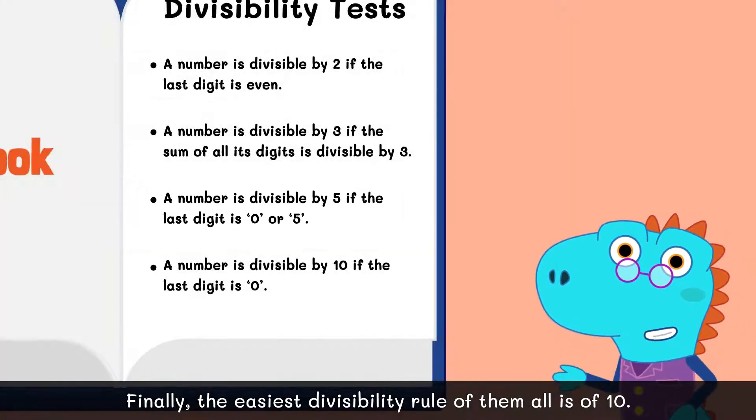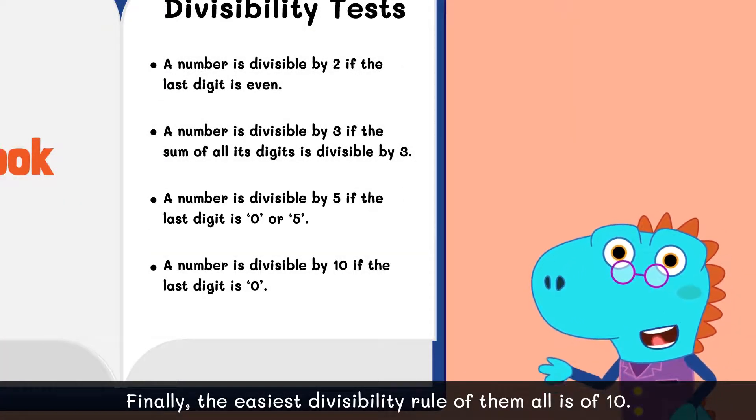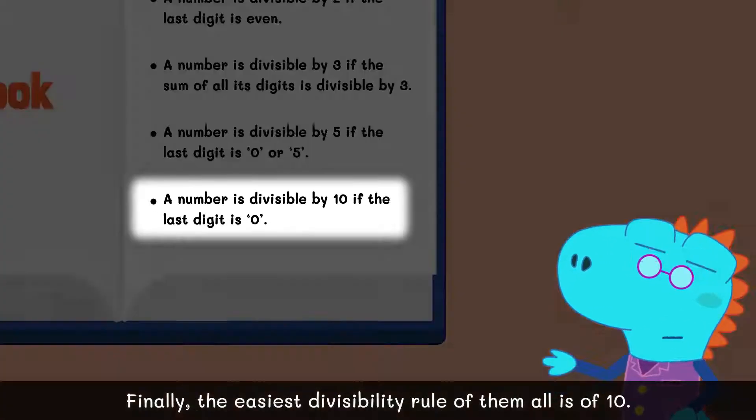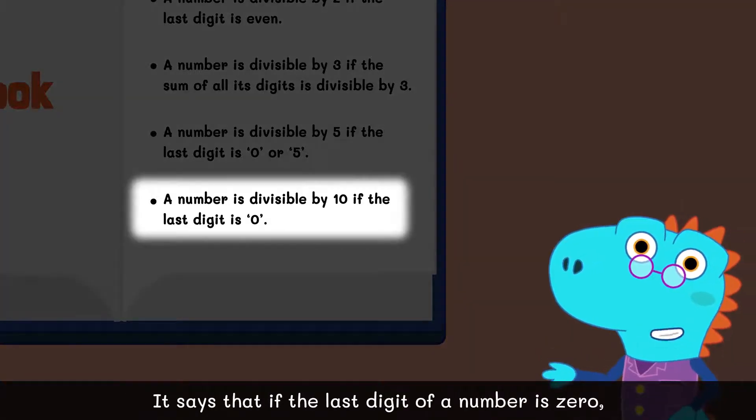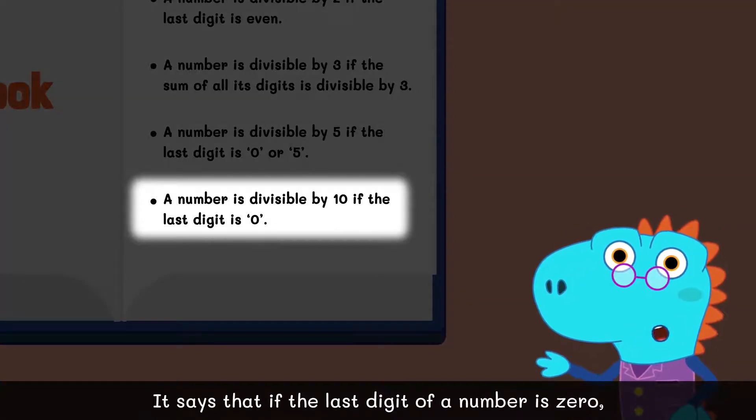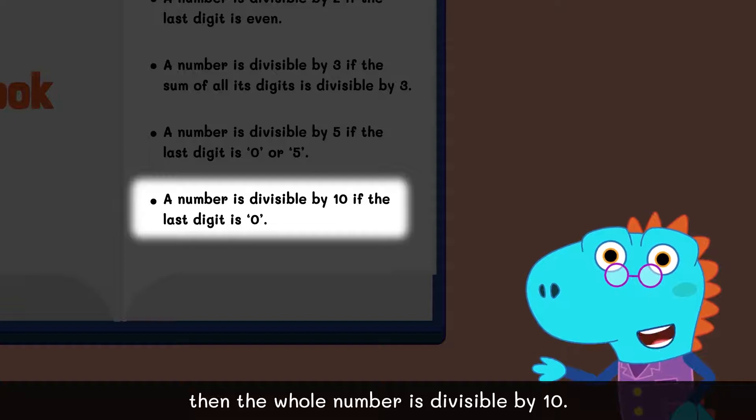Finally, the easiest divisibility rule of them all is of 10. It says that if the last digit of a number is 0, then the whole number is divisible by 10.